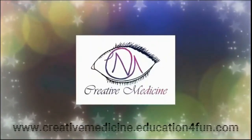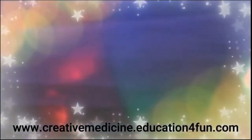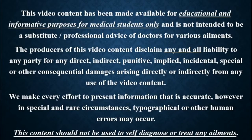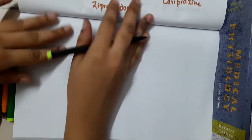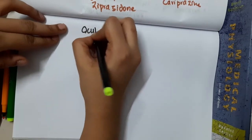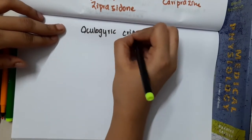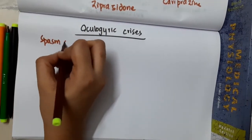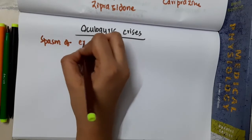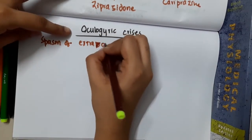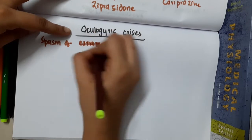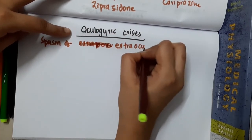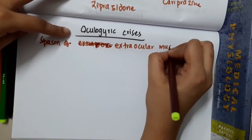Hello friends, welcome to Creative Medicine. In this lecture we will learn about oculogyric crisis. Oculogyric crisis is the spasm of extraocular muscles.